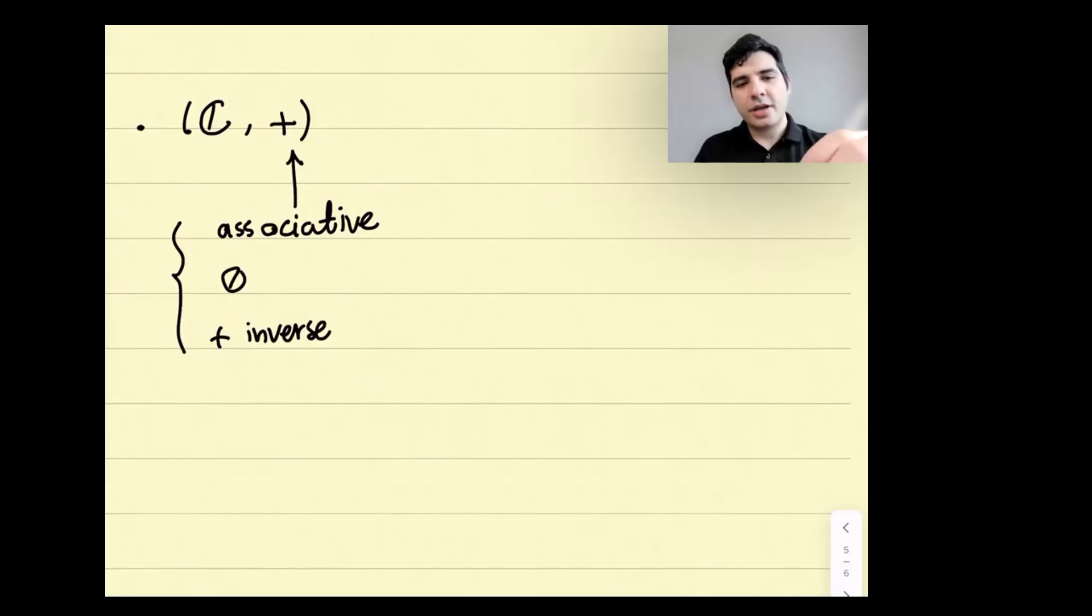Such an algebraic structure is called a group. We say C is a group. In abstract algebra, we call such numbers a group. R is also a group. R with addition is a group. It's a group and is a subset of C.